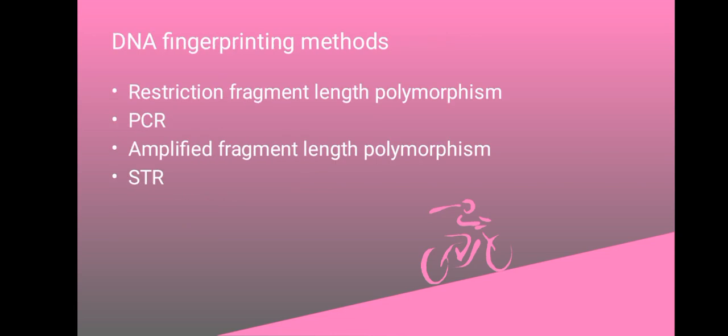Amplified fragment length polymorphism came into work in the 90s. It remains attractive because of its relatively uncomplicated operation and cost effectiveness. However, due to the use of gel in its analysis phase, there are issues of bunching of the VNTRs causing misclassification in the process.